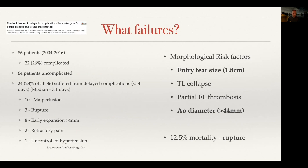When you look at these retrospective studies — 86 patients treated over essentially a 12-year period — 22 patients initially, so 25%, were complicated, and 64 patients were uncomplicated. But overall, more than 28% of patients suffered from delayed complications, firstly within the first 14 days, with a median of seven days. Ten had malperfusion, three rupture, eight early expansion, two refractory pain, and one uncontrolled hypertension. The morphological risk factors in all of these patients: large entry tear, true lumen collapse, partial false lumen thrombosis, and an aortic diameter of over four centimeters. Patients who ruptured had a 12.5% mortality.